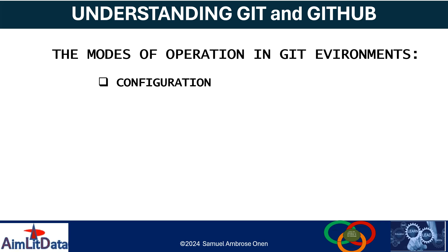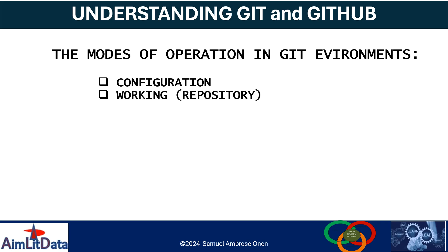That's why the configuration mode is very important — you need to configure your email address and your name. After that, you initialize Git in order to create a Git repository. After creating a Git repository, you have a working environment in that folder, which is now a Git repo. Inside that folder, you can do your coding and all sorts of activities on the files you want to version control and share with others.